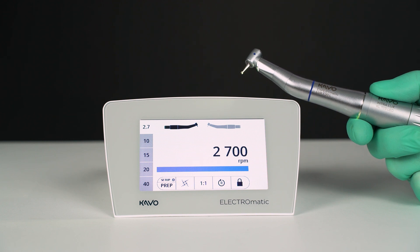Here, an Expertmatic E20L with a 1-to-1 ratio is chosen. Therefore, the maximum possible speed is 2700 rpm.